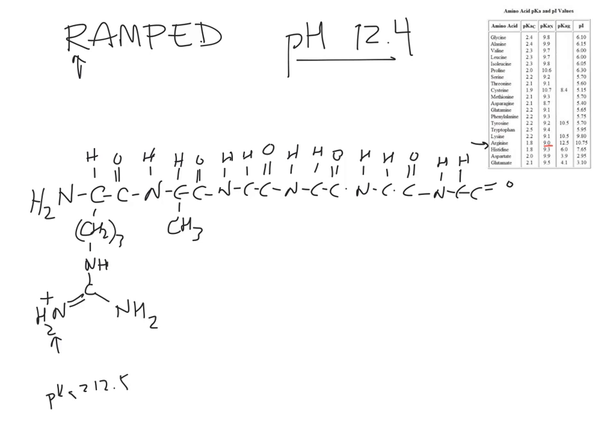The next one is methionine. We go here, we draw methionine, which is very easy. It's CH2 twice to a S to a CH3. If you look over at methionine, there's nothing to do with the R group, so there's nothing there.